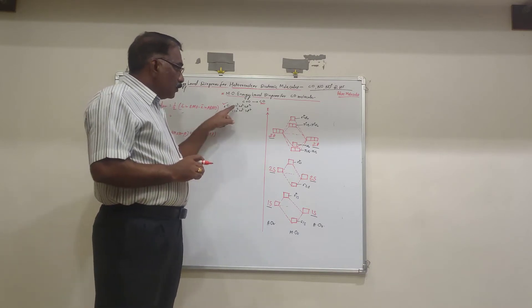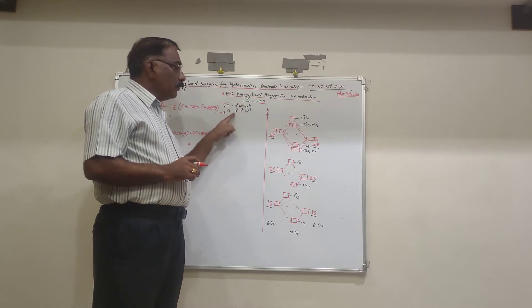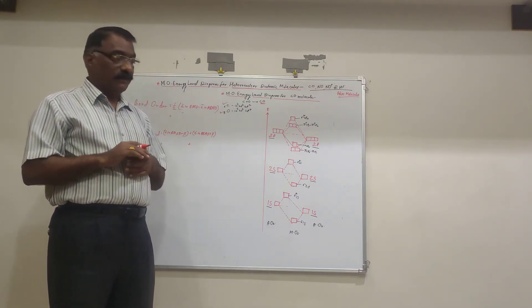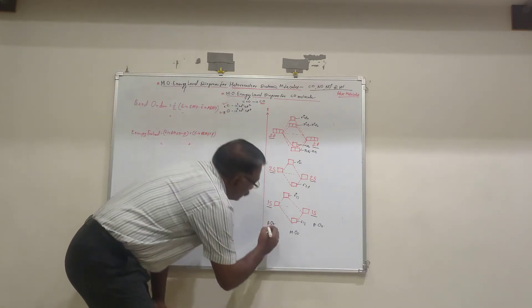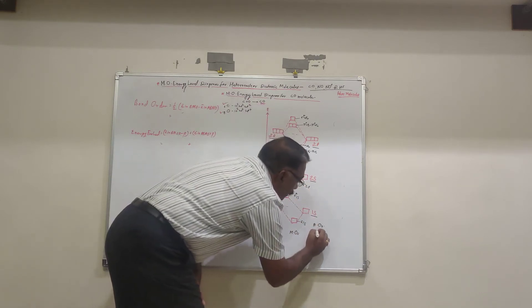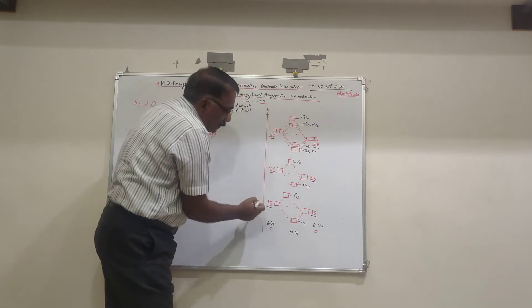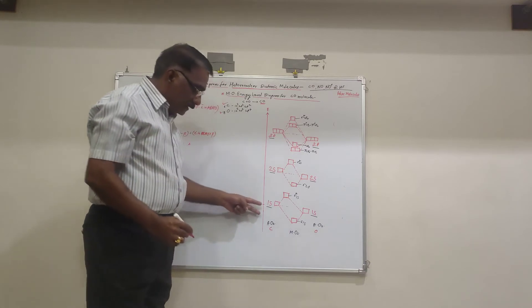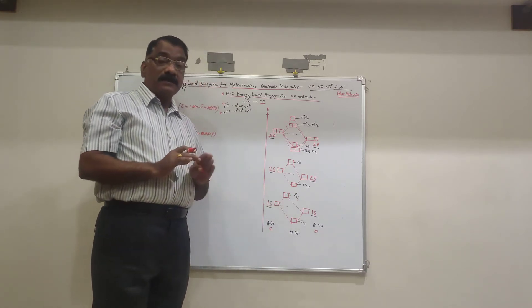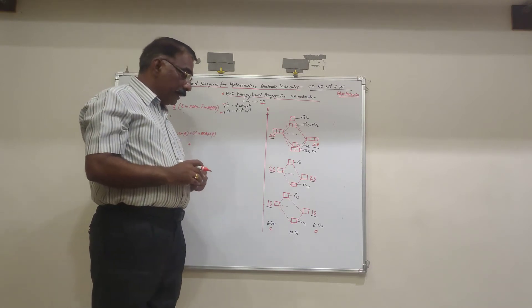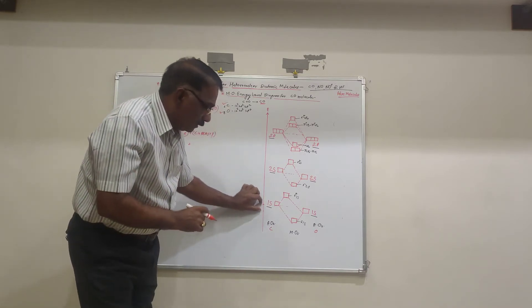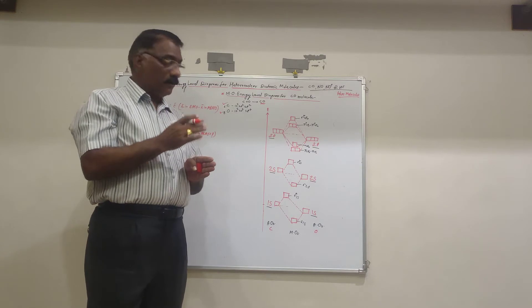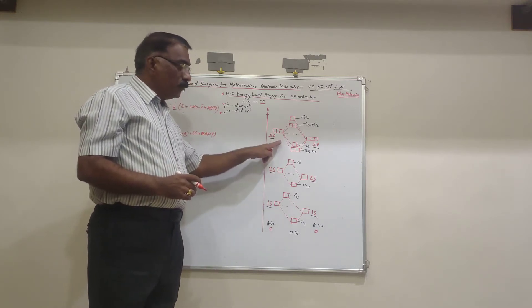The energy of the 1s orbital of carbon and the energy of the 1s orbital of oxygen are not the same — there is a difference between their energies. On the energy axis, the 1s level of carbon and the 1s level of oxygen sit at different positions. When they combine, their energy difference is small but not zero, so the resulting diagram will not be symmetrical. The same condition applies for 2s and 2p orbitals as well.